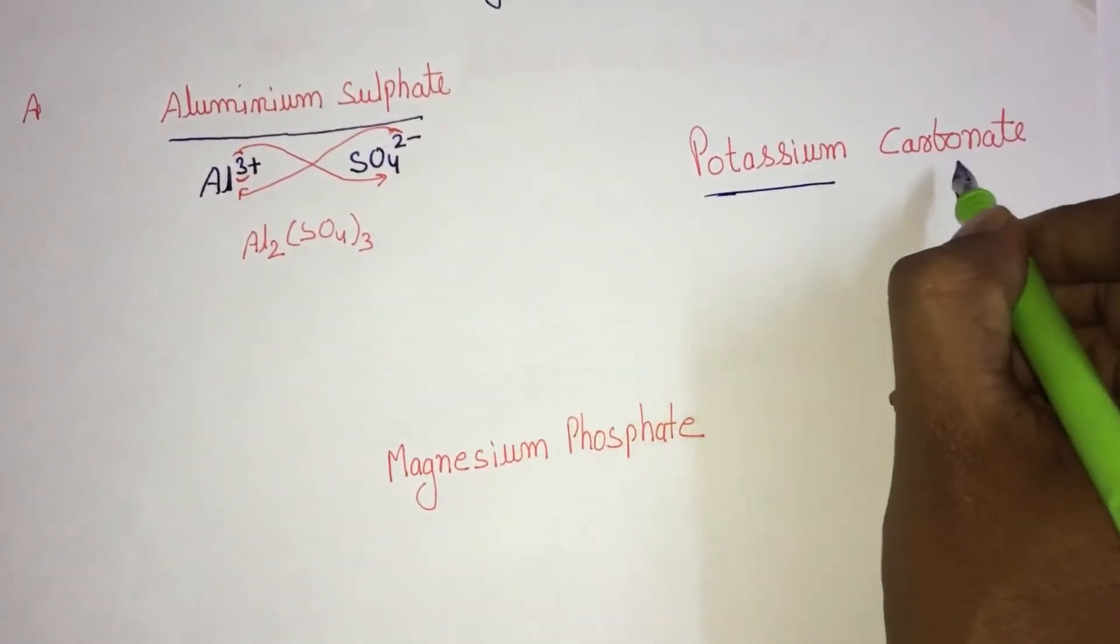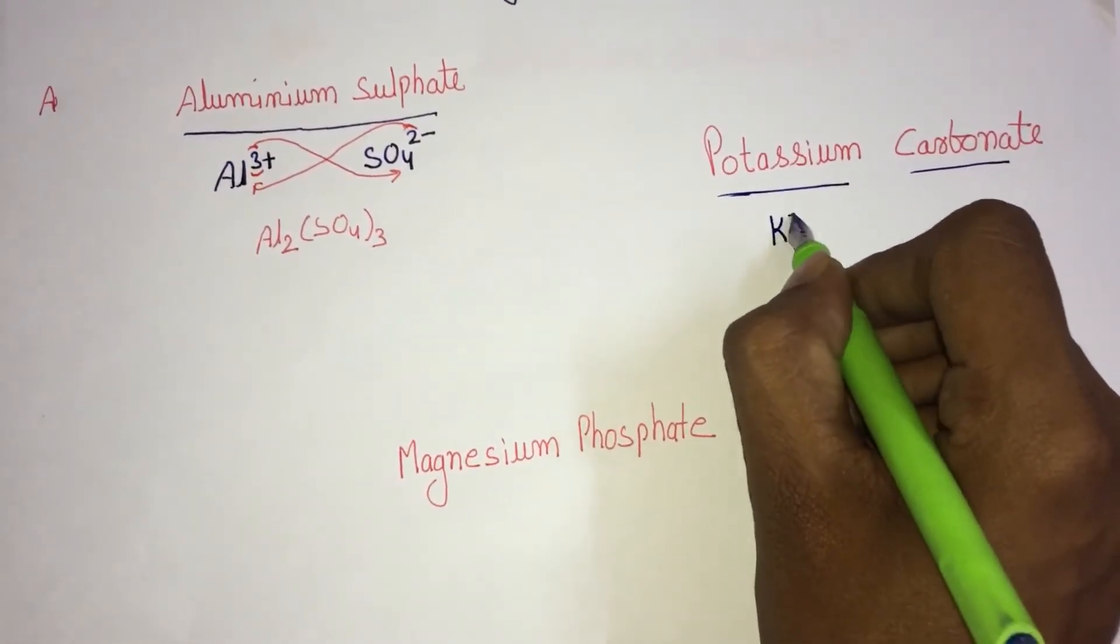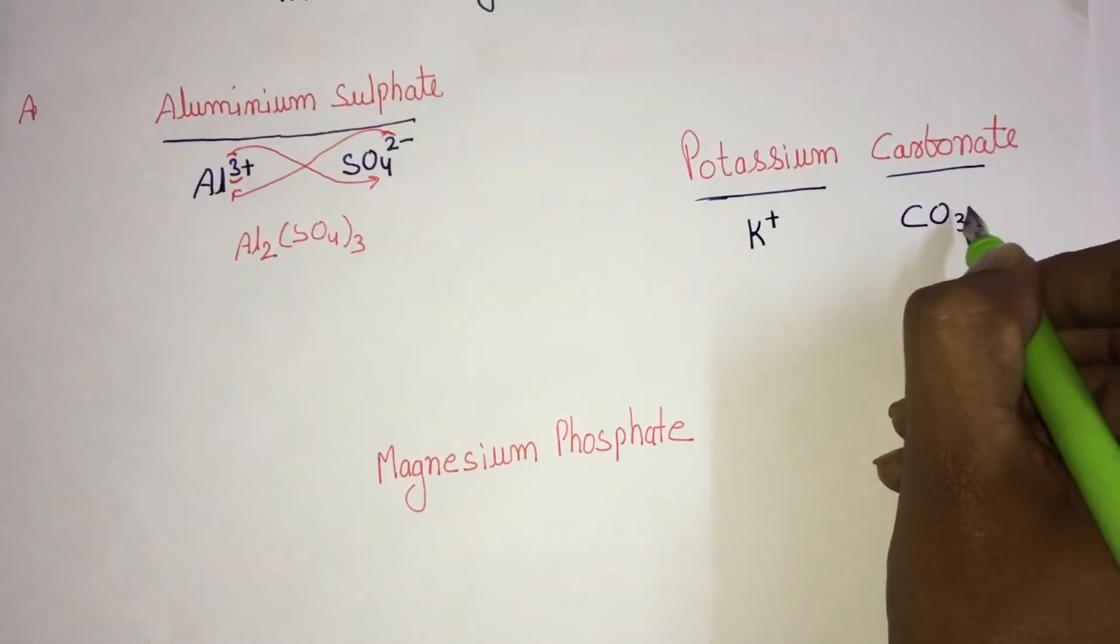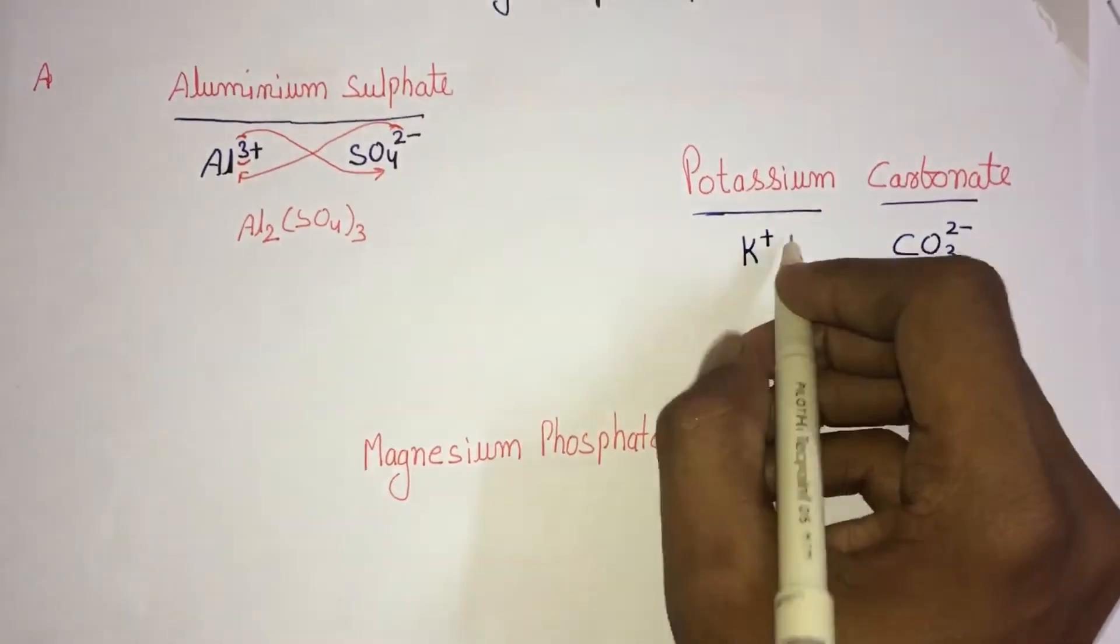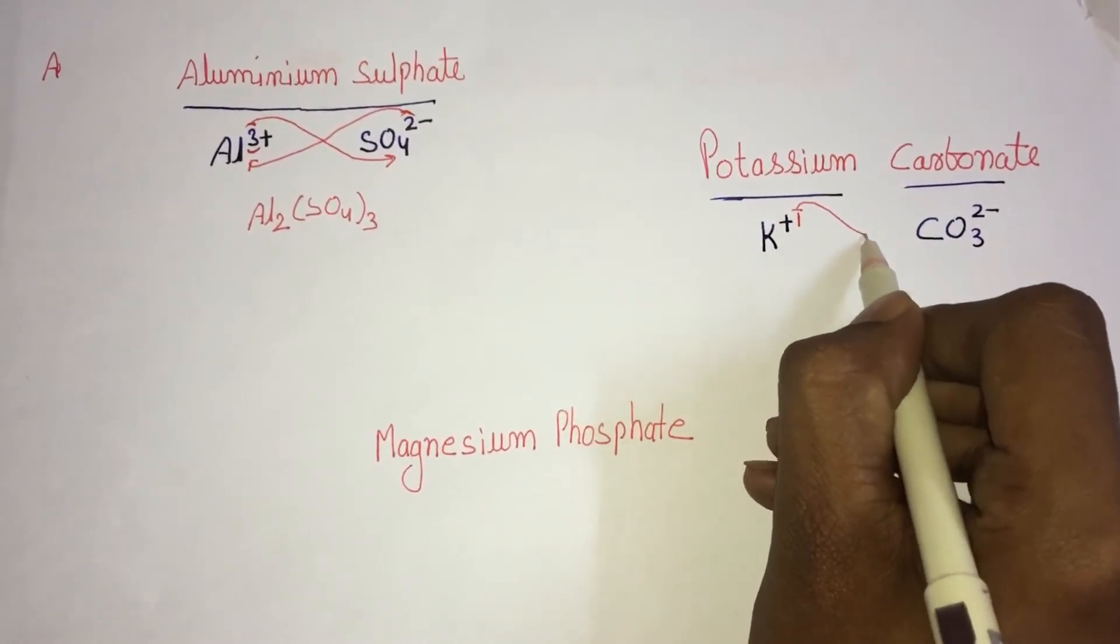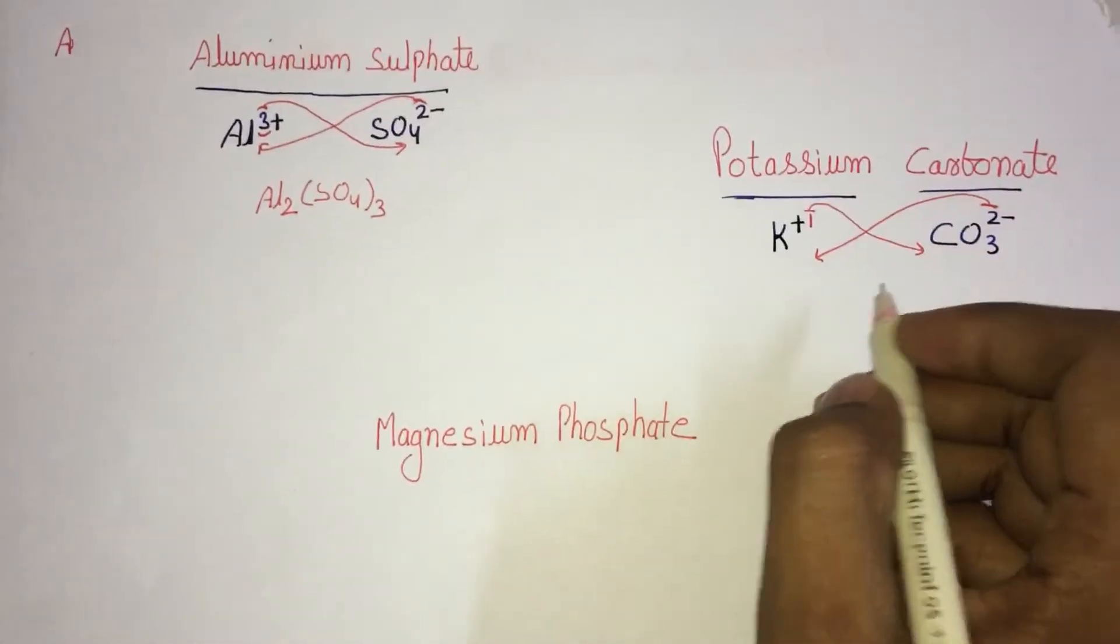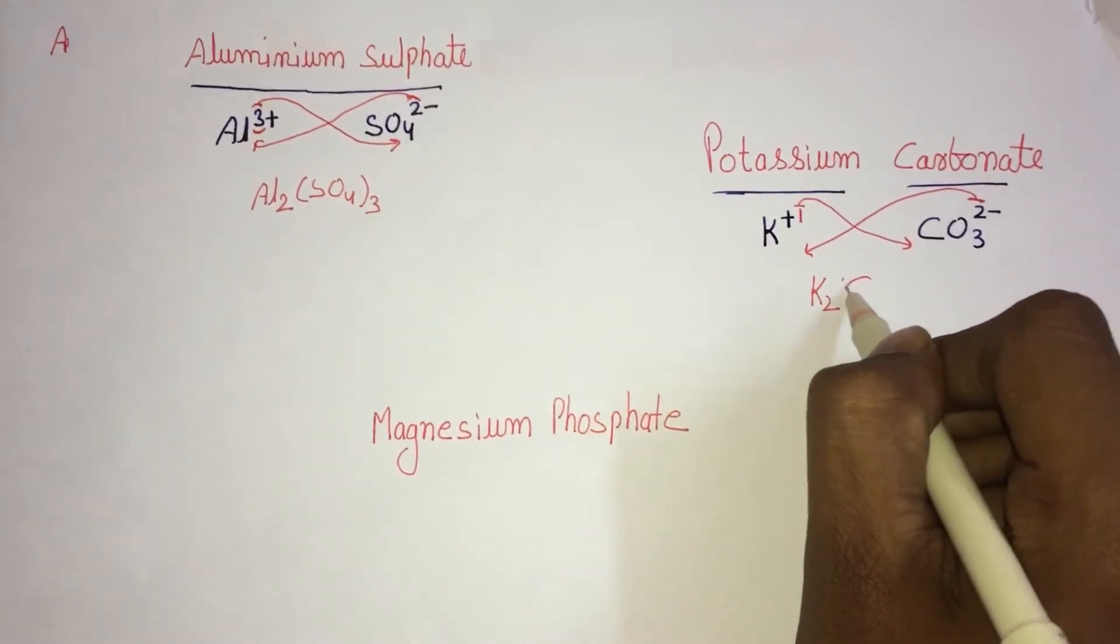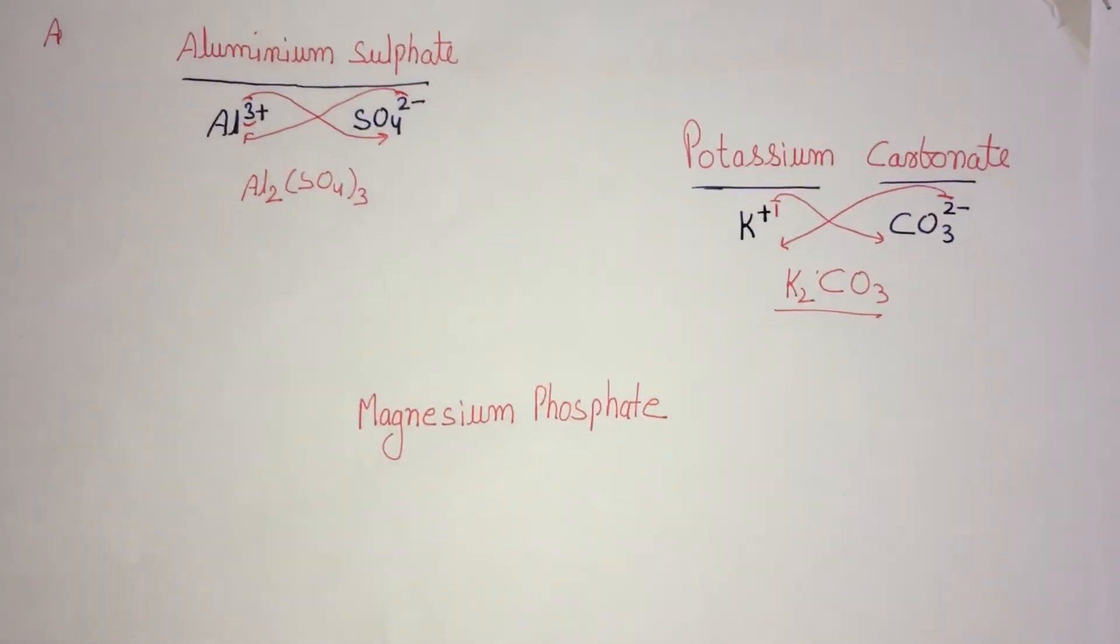If I want to write the formula of potassium carbonate: potassium is K+, carbonate is CO3 2-. Plus one goes to carbonate ion, two comes to potassium, so the formula is K2CO3.